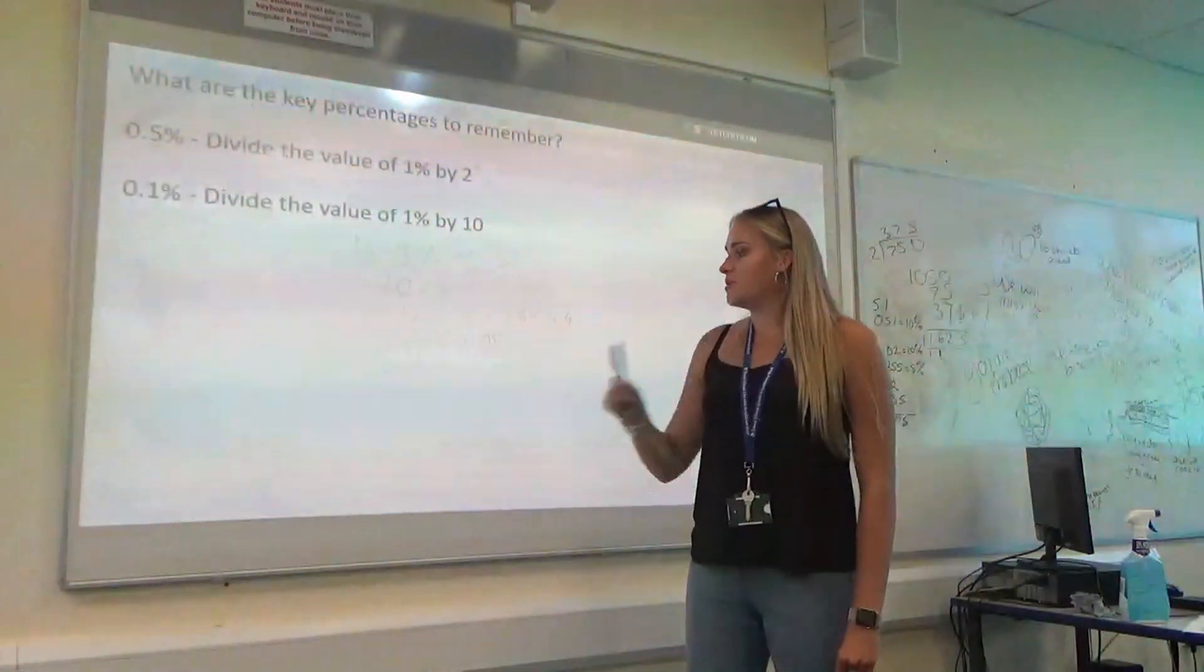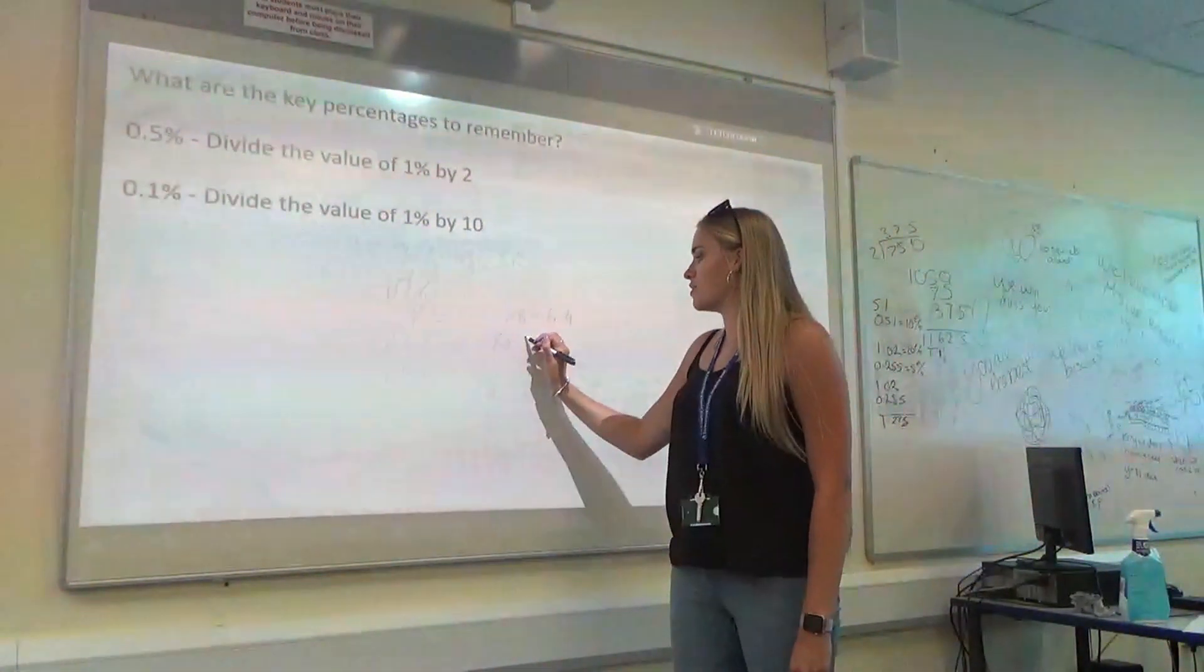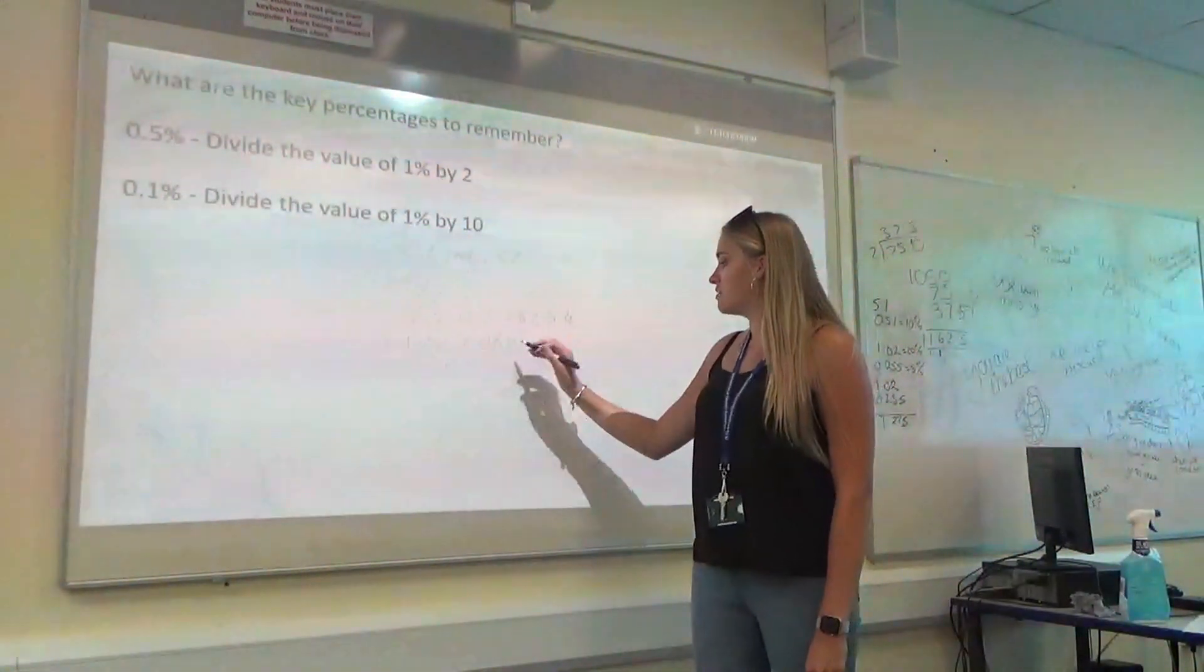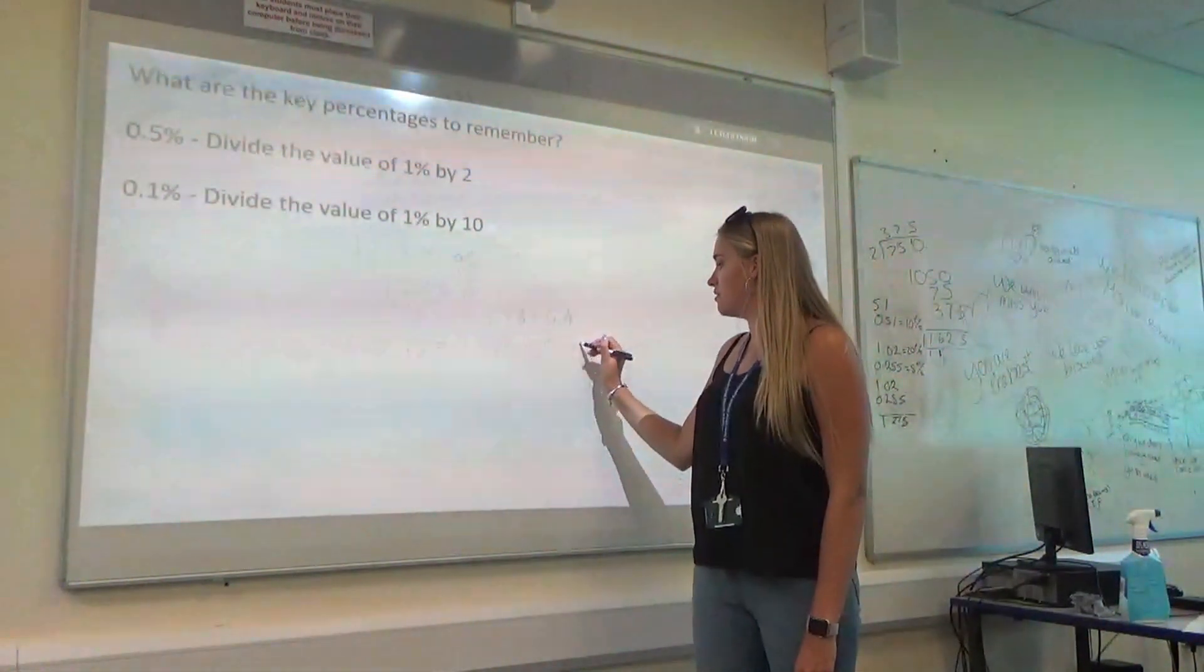This one here, I need 0.3%. So, I'm going to have to times this one by 3. So, I know that 8 times 3 is 24. So, I'm going to get 0.24.